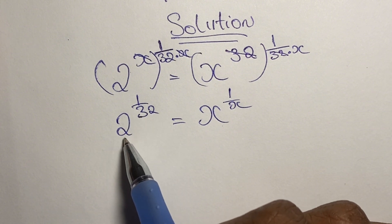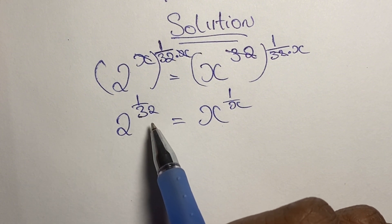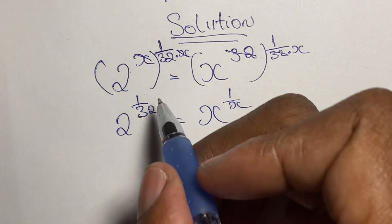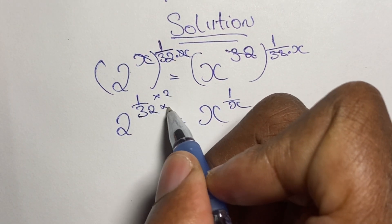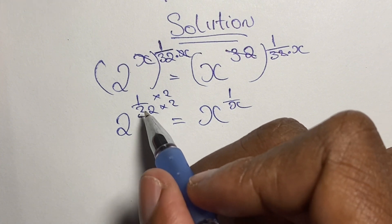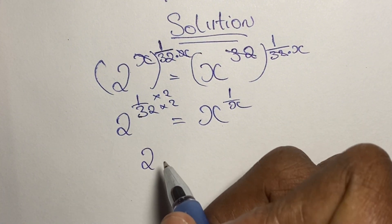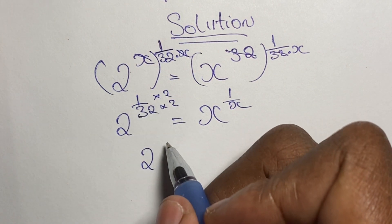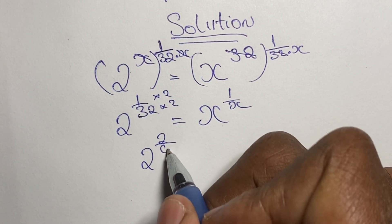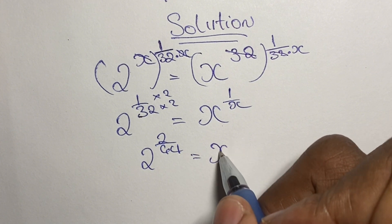We do this by finding an equivalent fraction for the exponent, multiplying both top and bottom by 2. So we have 2 to the power of 2 over 64, which equals x to the power of 1 over x.